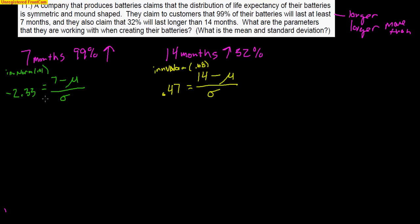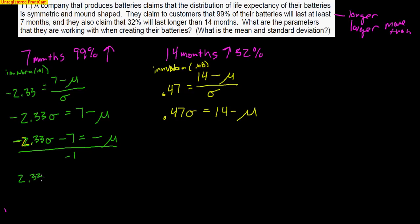Now, first thing I recommend doing is multiplying by sigma. What this does is it gets rid of fractions. Most kids struggle to solve anything involving fractions. So if we simply multiply both sides by sigma, we get rid of the fraction. At this point, I'm going to work with this left equation, and I'm going to solve it for mu. So negative 2.33 sigma. I'm going to subtract that 7 over. I do have to get rid of that negative on the mu. So I'm going to divide everything by negative 1. And I get positive 2.33 sigma plus 7 equals mu. So here is a nice equation that is solved for mu.